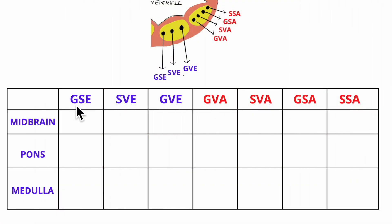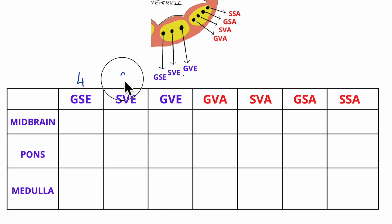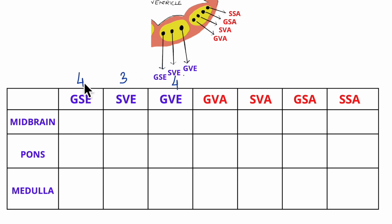Under GSE we have 4 nuclei, under SVE we have 3 nuclei, and under GVE we have again 4 nuclei. So you have to remember: 4 for GSE, 3 for SVE, and 4 again for GVE.